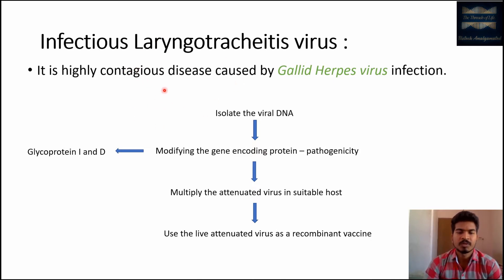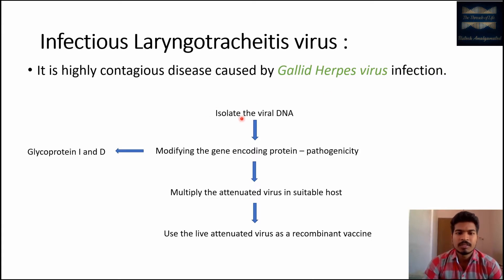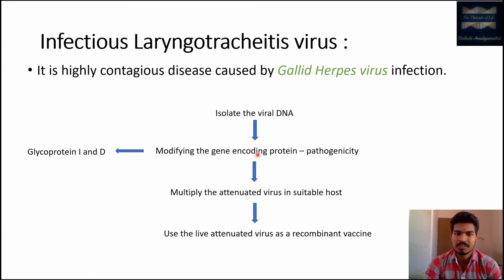This is an example of the second type — the attenuated recombinant vaccine — for infectious laryngotracheitis virus, caused by gallid herpesvirus. We isolate the viral DNA from gallid herpesvirus and modify the gene encoding the pathogenic protein. In this case, glycoprotein I and D are encoded by a segment of DNA; we mutate that segment and insert the modified genome back into the gallid herpesvirus. The virus now replicates its mutated genome in each replication cycle.